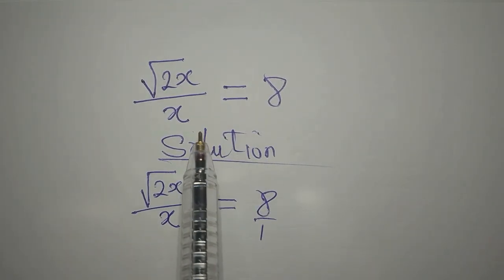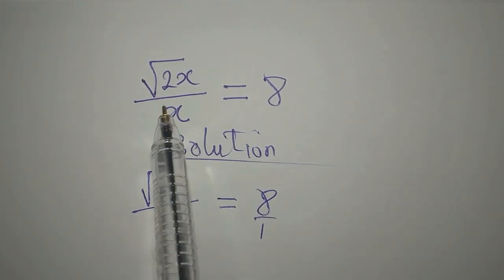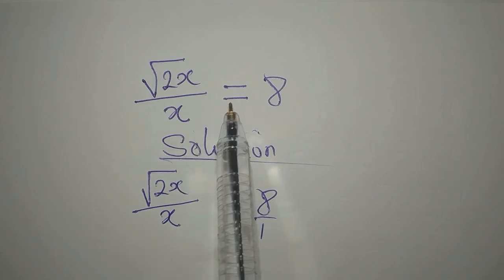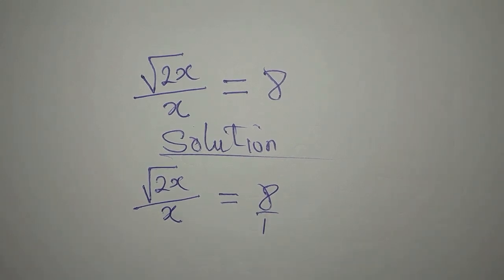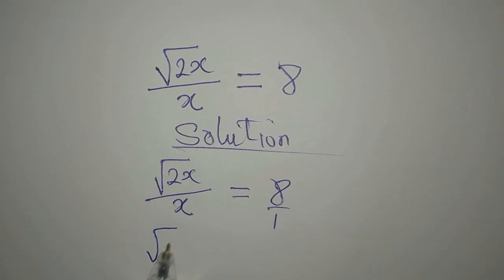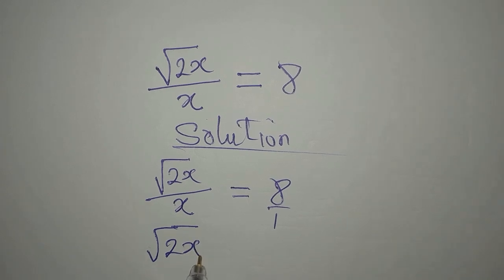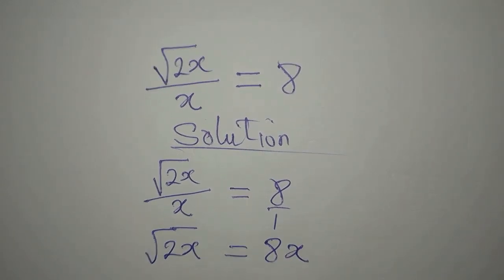Hello everyone, we have square root of 2x over x equals 8, so let's provide the solution to that. This can be 8 over 1, so we will just cross multiply. Then root 2x will just be equal to 8 times x, that is 8x.